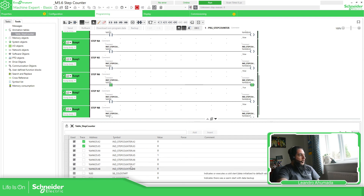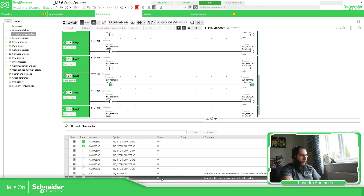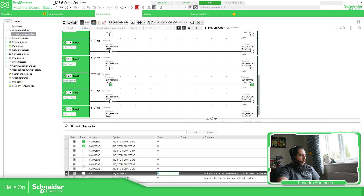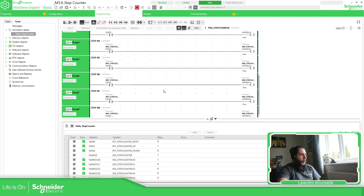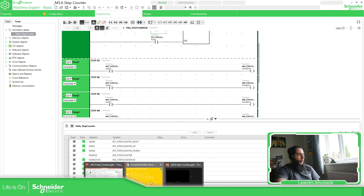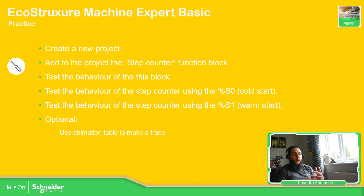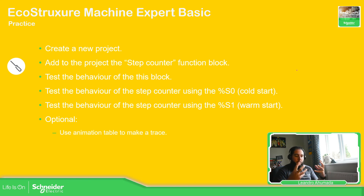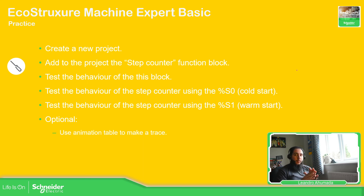If I use the reset it goes back to step 0 - this is something you can test on your own. What I want you to do is create a new project, play with it, use the step counter associated with a %NW variable and the %SC instance. Try the cold start and warm start behaviors, and if you want to really see how the count up and count down move the bits, use the trace. This is it for the step counter, which is different from the counter we have seen previously. Thank you very much for watching and I'll see you in the next one.